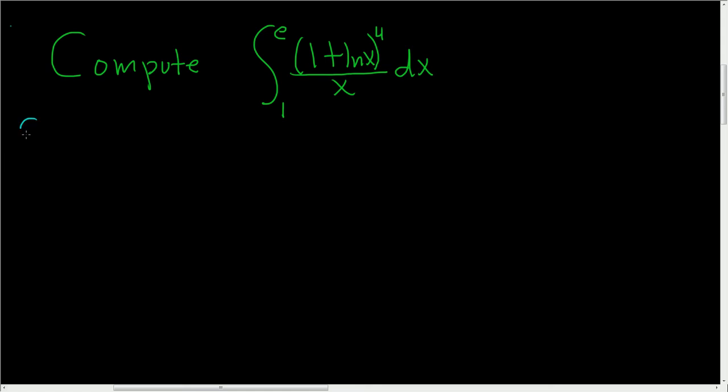So we have a definite integral. Let's go ahead and work it out. Solution. We need to make some type of u-substitution, and the obvious choice is this piece here.